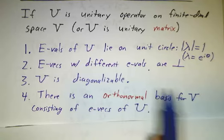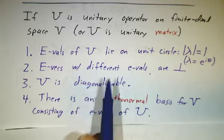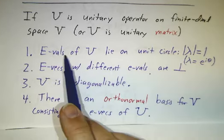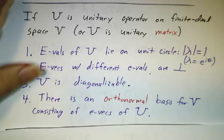Now, this is almost the same list of properties we had for Hermitian matrices. The only difference is that eigenvalues of Hermitian matrices are real. Eigenvalues of unitary matrices lie on the unit circle. So let's see why that is.